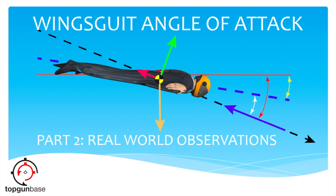Welcome back to Top Gun Base, and welcome to Part 2 of our Wingsuit Angle of Attack Discussion: Real World Observations. In Part 1, we defined the what and the why of angle of attack. In short, where you're looking and where you're pointing your wingsuit has nothing to do with where you're actually flying. I highly recommend watching Part 1 first. For this episode, I've got four case studies to decipher real-world AOA from slightly different perspectives, and once you know the visual cues to hone in on, identifying and understanding angle of attack might become a little more intuitive for you.